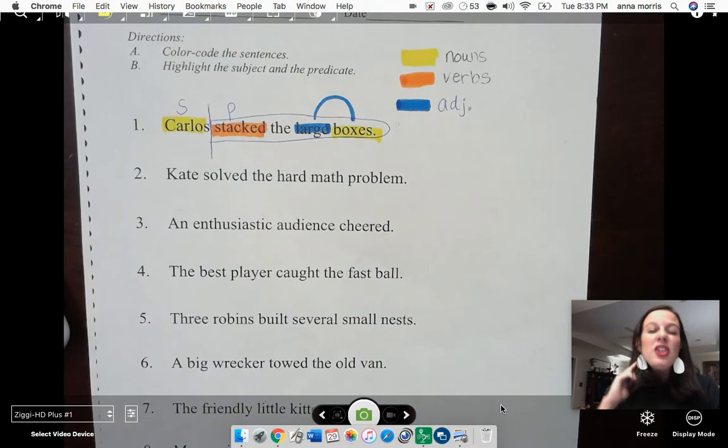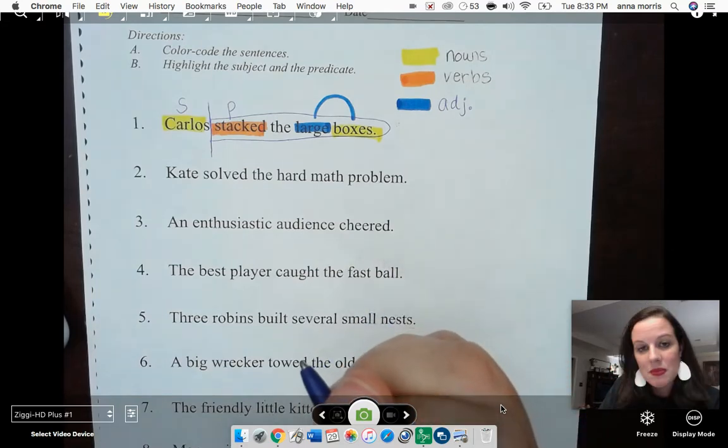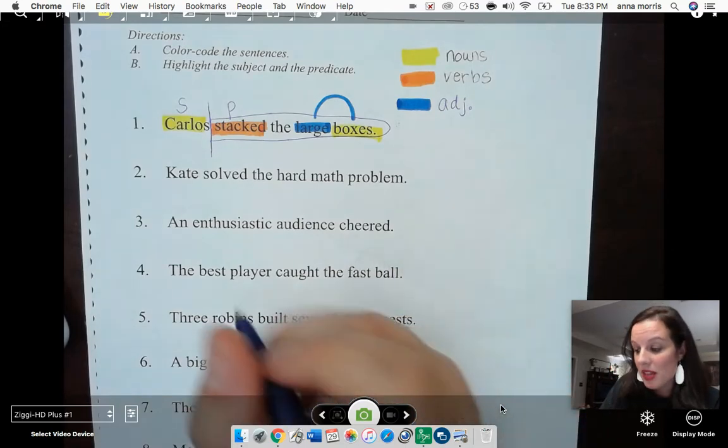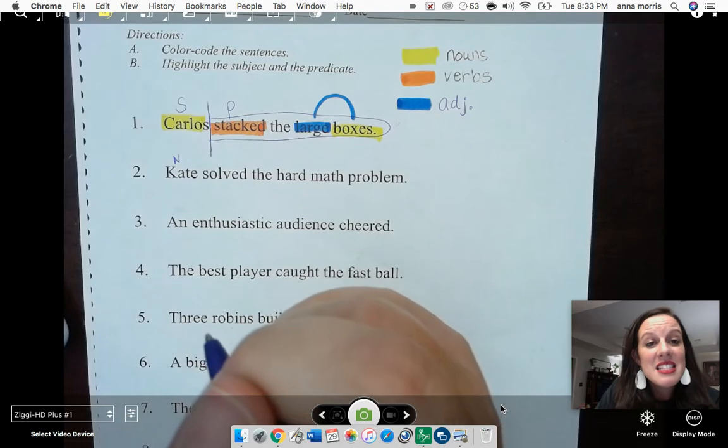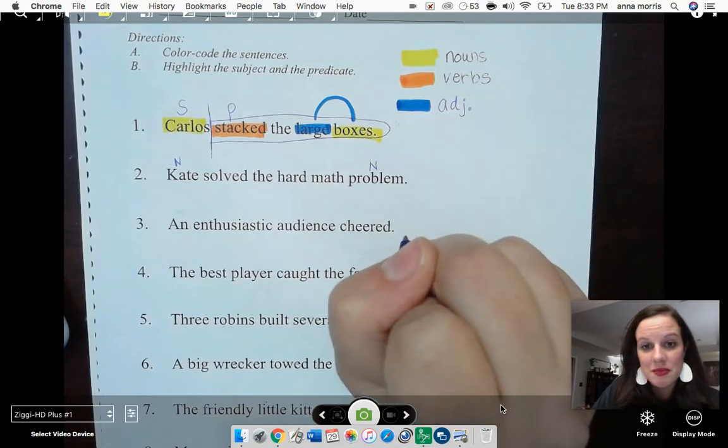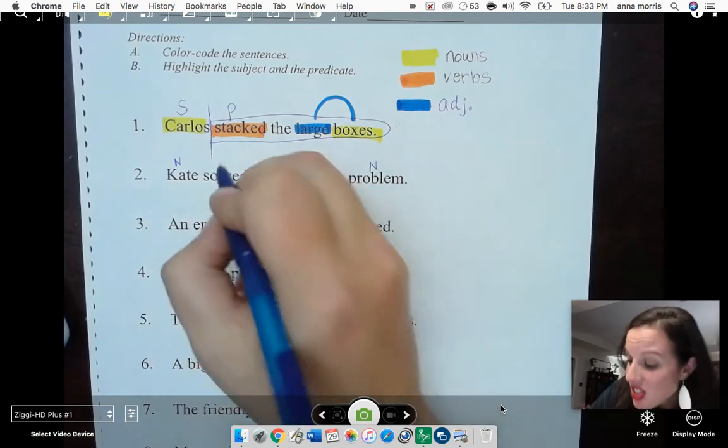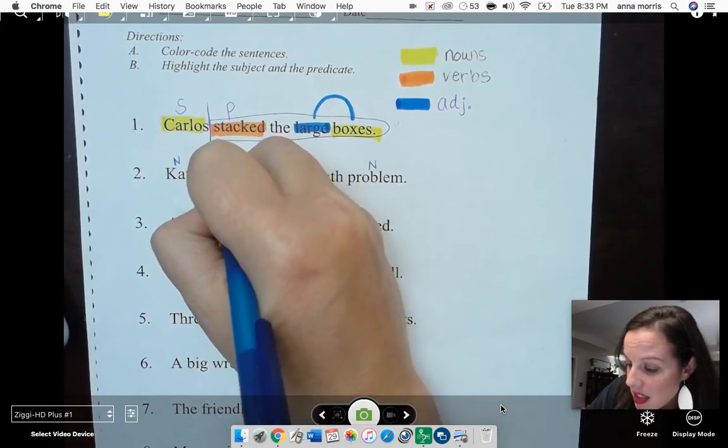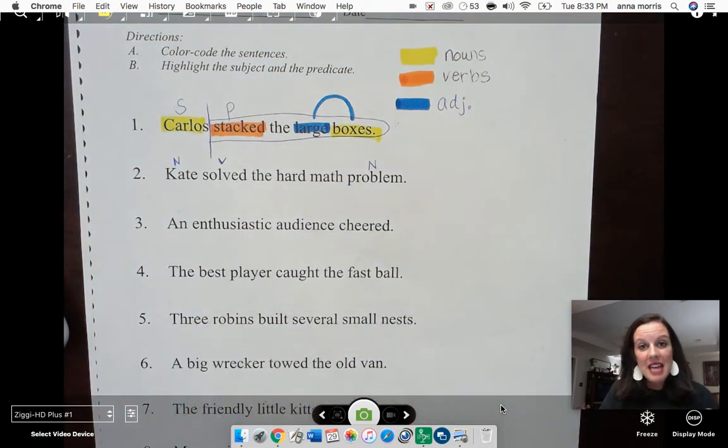Now, if you did not have any colors and you wanted to color code your sentence, you could do it like this. The first noun that I see is Kate. I can mark my noun with an N. The second noun that I see is math problem. What did Kate do? She solved the hard problem. Solved is our verb.